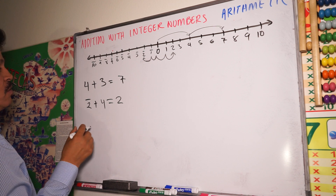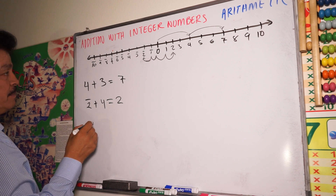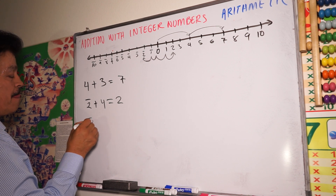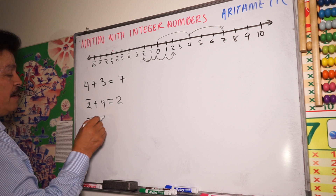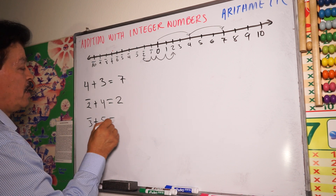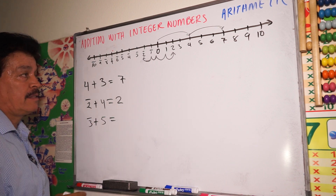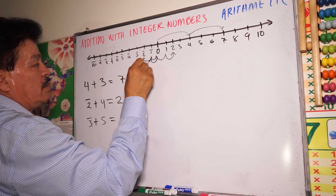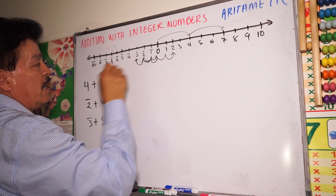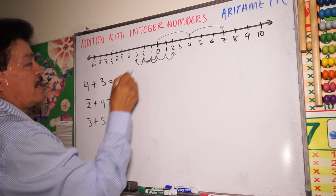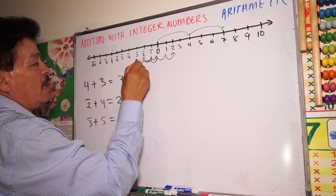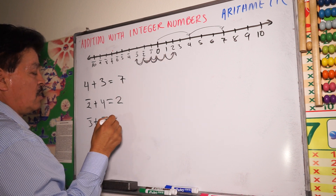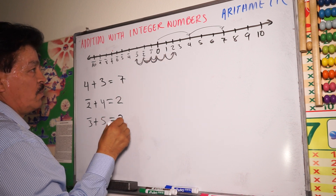Another example: you have minus three plus five. Minus three plus five — move to the left one, two, three. Then plus five — one, two, three, four, five. It equals two, right?